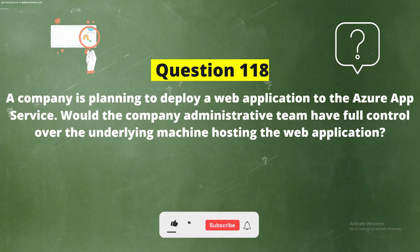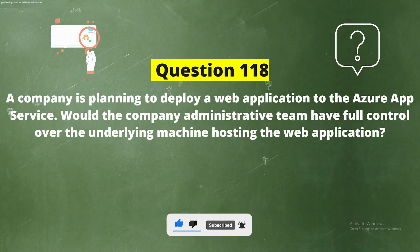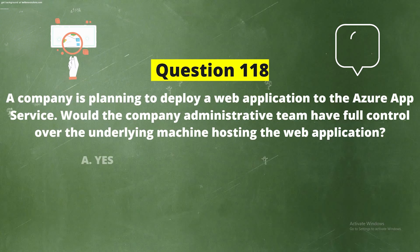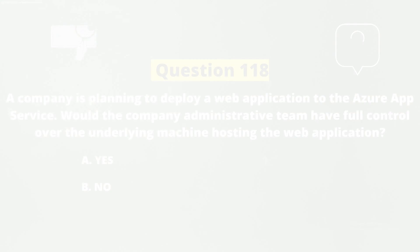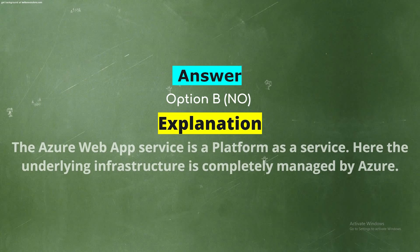Question 118: A company is planning to deploy a web application to the Azure App Service. Would the company's administrative team have full control over the underlying machine hosting the web application? The correct answer is Option B: No. The Azure Web App Service is a Platform as a Service, where the underlying infrastructure is completely managed by Azure.